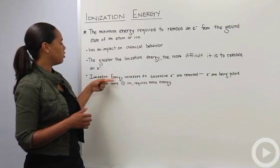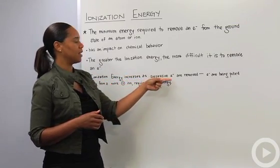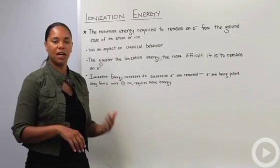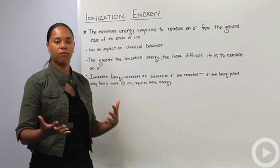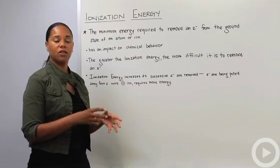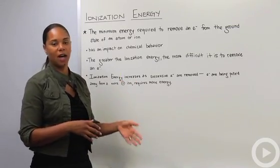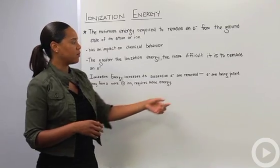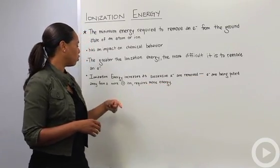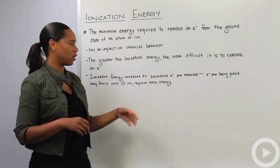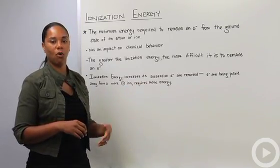Ionization energy increases as successive electrons are removed. You can have a first ionization energy, second, third, fourth, and so on. The first ionization energy might be fairly low, then the second gets a bit higher, the third even higher. That's because the electrons are being pulled away from a more positive ion as you continue to remove electrons, and that requires even more energy.